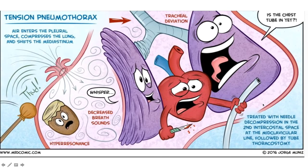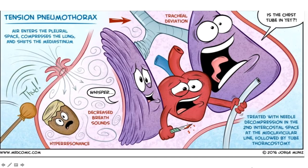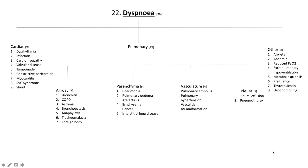Then pleural effusion and pneumothorax. Here's a fun way to represent tension pneumothorax, once again from George Muniz at medcomic.com. Air enters the pleural space compressing the lung and shifting the mediastinum. On the right side, percussion gives hyper-resonance — depicted by banging on bongos — with absent or decreased breath sounds, and tracheal deviation to the opposite side. Management is needle decompression in the second intercostal space at the midclavicular line, followed by thoracostomy with insertion of a formal intercostal chest tube.